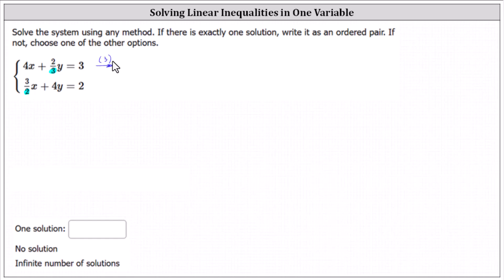Multiplying both sides of the first equation by three, we have 12x plus 2/3 times 3 is 2, giving us plus 2y equals on the right side, 3 times 3 is 9.